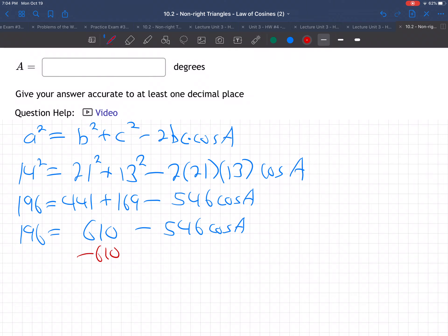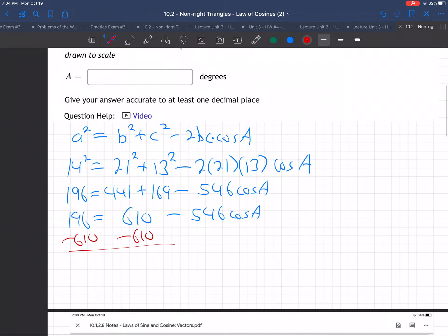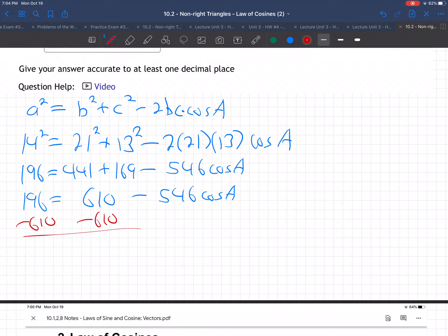And then subtract 610 from both sides. And what are we going to get there? Let me see, 196 minus 610. I'm getting minus 414. These cancel. There's minus 546 cosine A, then divide by minus 546. These cancel. Let me bring it over here. Here, so I'll just make this 414, I'll just leave it, 414 over 546, the two negatives make positive, right? Equals cosine A.